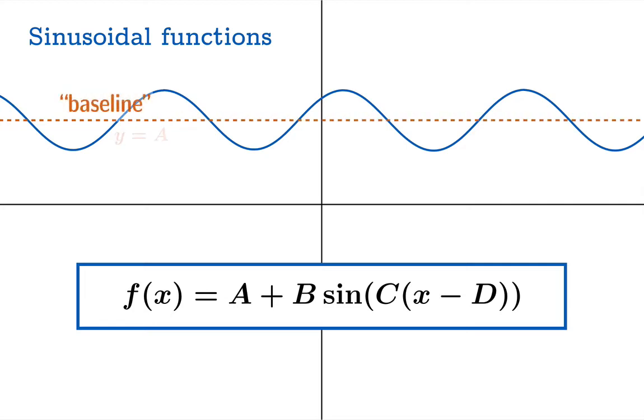The line y equals A constitutes what we'll call the baseline of the function. It's the base around which the graph oscillates. The amplitude of the graph is given by the absolute value of B. The period of the graph is given by 2π over absolute value of C. D, by the way, controls how far along the horizon you shift your graph.